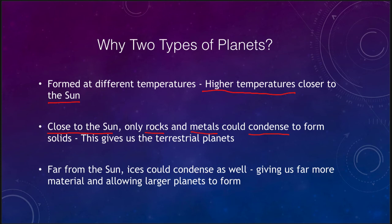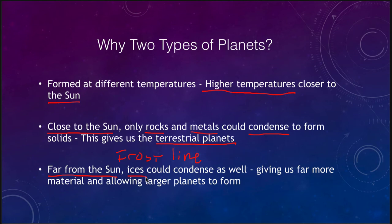So the terrestrial planets close to the Sun could only form from rock and metal — high density materials, rocky materials, metallic materials, with very little ices or gases. While the Earth has an atmosphere and a lot of water and ice, it's a very small percentage of the overall composition of the Earth. This gives us terrestrial, or Earth-like, planets made primarily of rock and metal. When you're far from the Sun, past what we'd call the frost line, where ices could condense, then we'd have ices as well — things like water, H₂O, but also methane and ammonia.